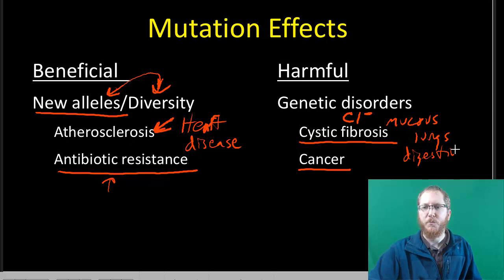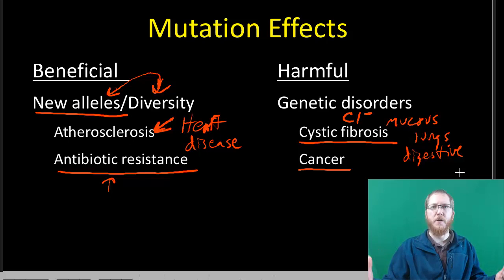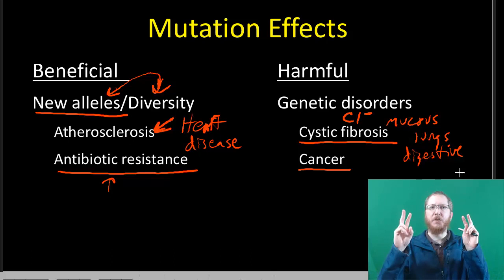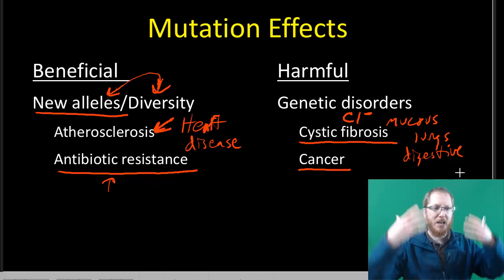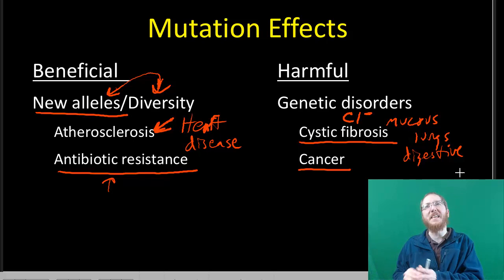Many genetic disorders come from a parent who has the mutated gene — sometimes they have the allele but don't express it, so they don't have the disorder themselves but can still pass it on. For example, someone might not have cystic fibrosis as a disorder but carry the gene and pass it on. We'll get into that a lot more in Unit 4 when we talk about genetics. Alright, that's it for mutations and sections 3.9 and 3.10. Hope you enjoyed it. Thank you.